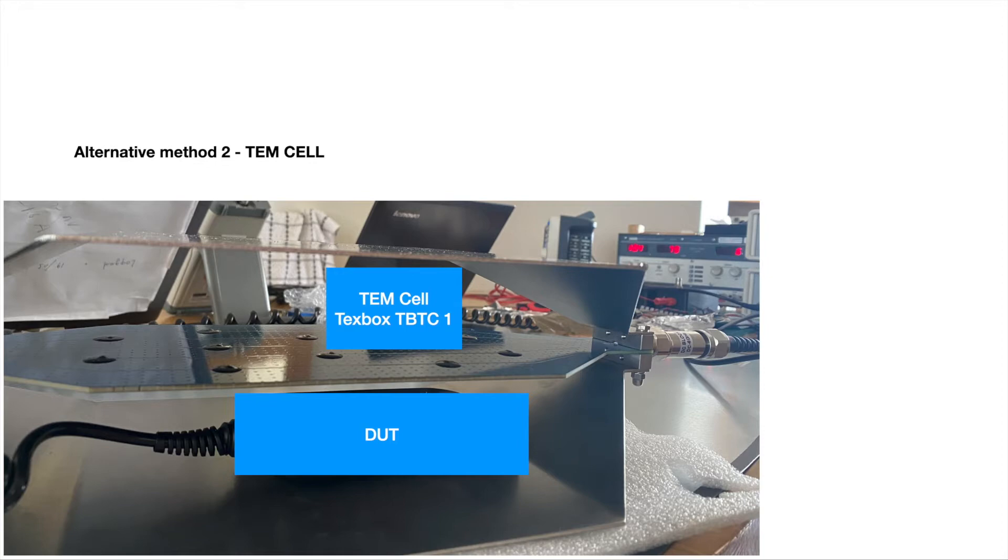However, in this case, I could not see the failures. Maybe the next step is to choose a smaller TEM Cell. So the RF field is much larger than the RF field of this TEM Cell and give it another try. But as this test setup suggests that we could not reproduce the same failure modes.